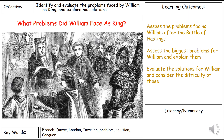Our learning outcomes for today: we're going to assess the problems facing William after the Battle of Hastings, assess which were the biggest problems for William and explain them, and look at what solutions William could use and which ones he chose and why this might cause some further problems. So let's get started.